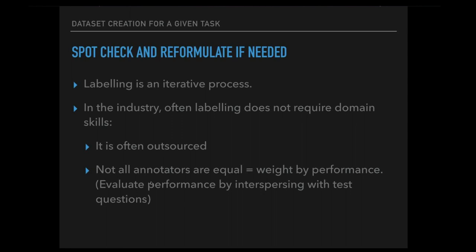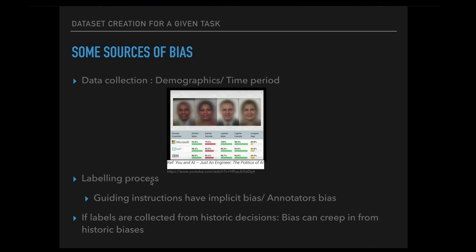When outsourcing, we intersperse the labeling process with test questions — cases where we already know the label — to get a baseline performance of annotators. We then weight annotators who perform well more heavily and down-weight those who perform poorly. It's also important to understand that bias can creep into a dataset in multiple ways.